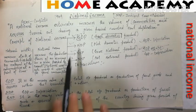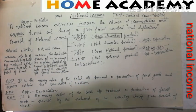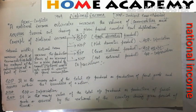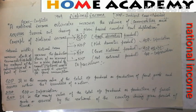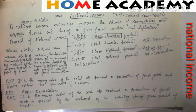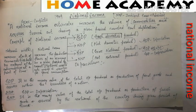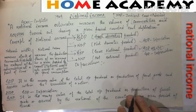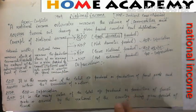So we have covered GDP, NDP, and GNP. If you want to note the definition: Gross National Product refers to the money value of the total output or production of final goods and services produced by the nationals of a country during a given period of time, generally a year. In calculating GNP we include the money value of goods and services produced by nationals outside the country.